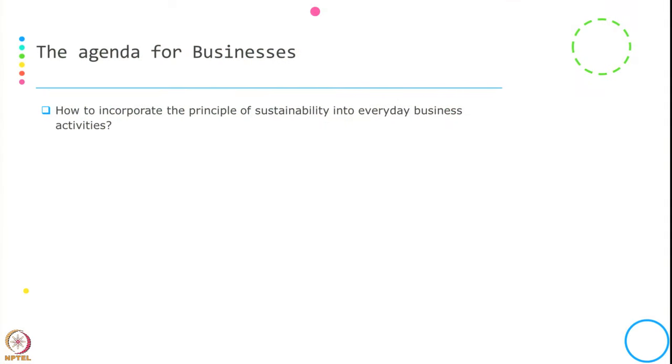But before getting into the sustainability tools, let us understand what is Cleaner Production Process. In this session we will explore what is Cleaner Production and what are the different options for it. The basic question businesses face is: how do they incorporate the principle of sustainability into everyday business activity?